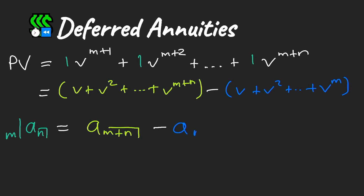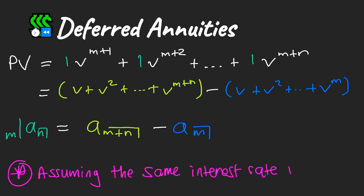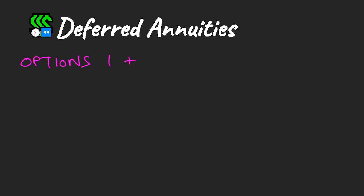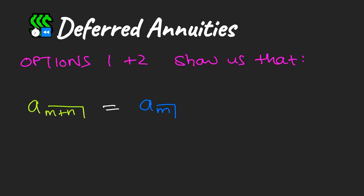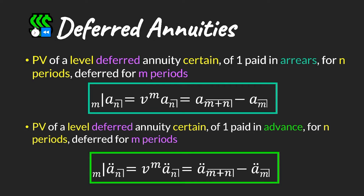This approach assumes the same interest rate applies throughout the timeline. If there is a change in interest rate, we cannot simply do this, because the annuity functions would each need to use a different rate — making things more complicated. Options one and two together show that an annuity over the full period equals the annuity over the deferment period plus the discounted annuity over the remaining period.